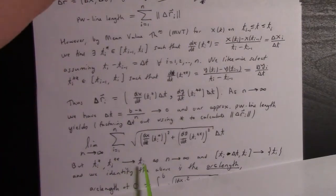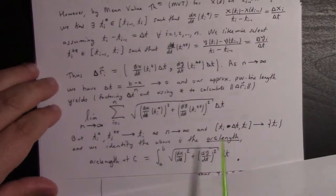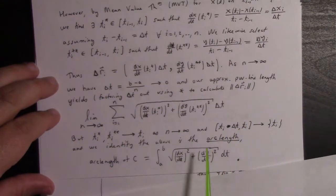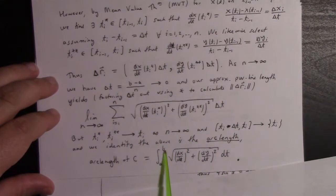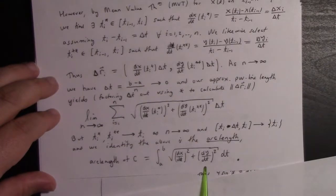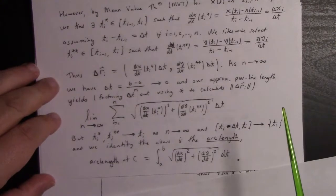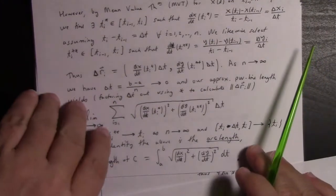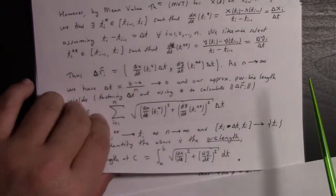Then the length of our piecewise line in the limit should reach the length of that string. So this limit as N→∞ of the sum from i=1 to N of the square root should calculate the arc length. But more than that, as N→∞, the sample points go to just Tᵢ because this interval shrinks to a point. So we can identify this as the integral from A to B of √((dx/dt)² + (dy/dt)²)dt, which we define to be the arc length.